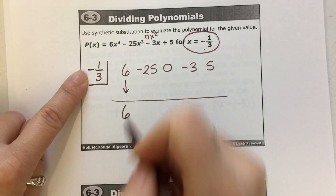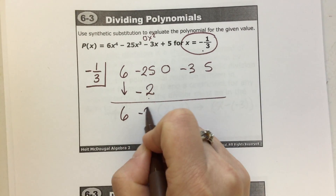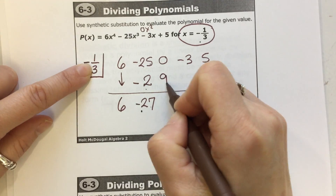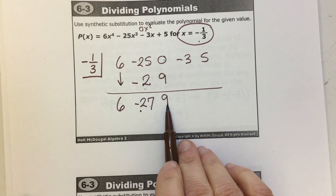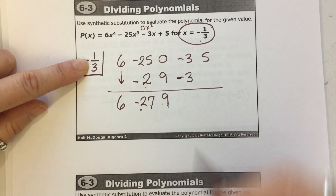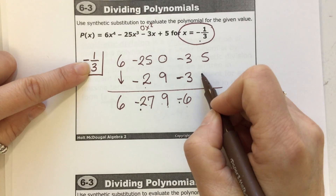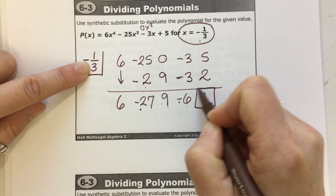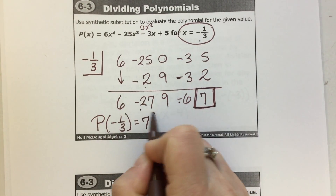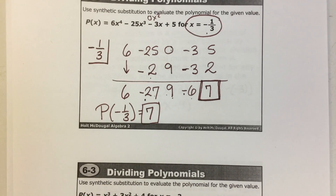Positive times negative: 1 third of 6 is 2, so negative 2. Negative 25 plus negative 2 is negative 27. Negative times negative: 1 third of 27 is 9. 0 plus 9 is 9. Positive times negative: 1 third of 9 is 3, so negative 3. Negative 3 plus negative 3 is negative 6. Negative times negative: 1 third of 6 is 2. 5 plus 2 is 7. So the polynomial, when you fill in negative 1 third for all x's, has a value of 7. Synthetic division can be used both to divide and evaluate polynomials.